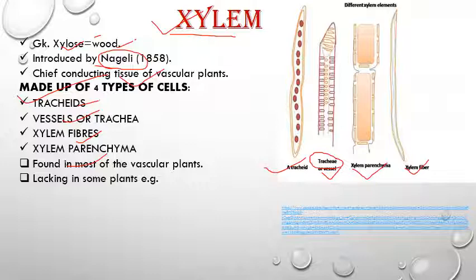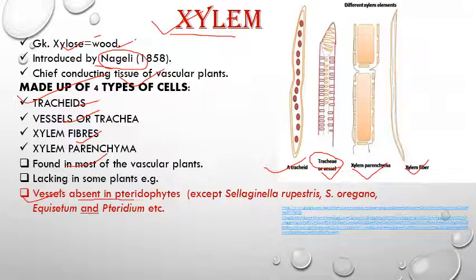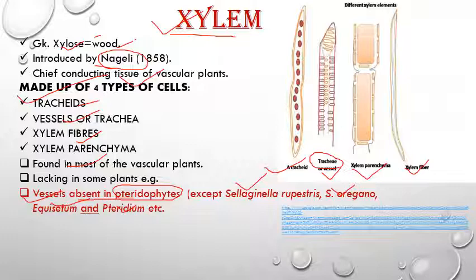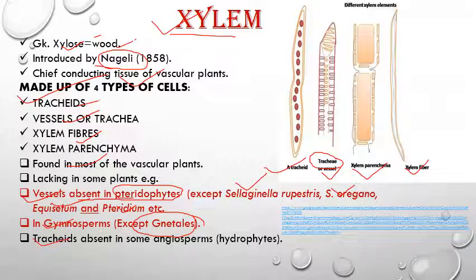There are some exceptions regarding vessels. In pteridophytes such as Selaginella, Equisetum, Isoetes, and Pteridium, vessels are present — this is exceptional. In gymnosperms, vessels are also generally absent, but one advanced group called Gnetales has vessels present, for example Ephedra, Welwitschia, and Gnetum.